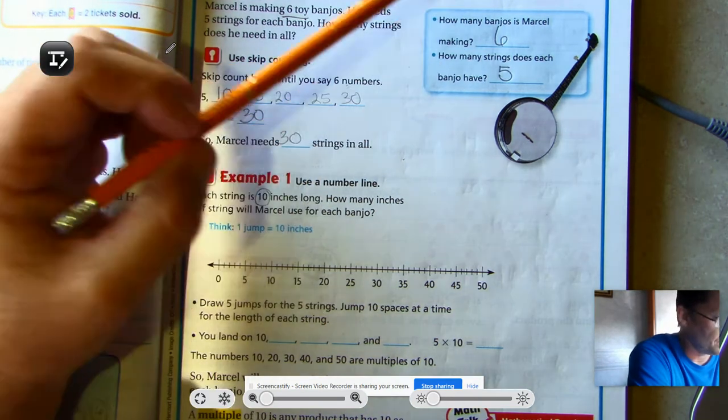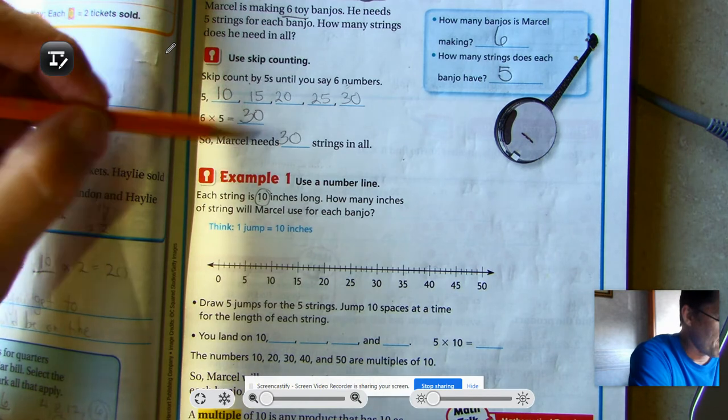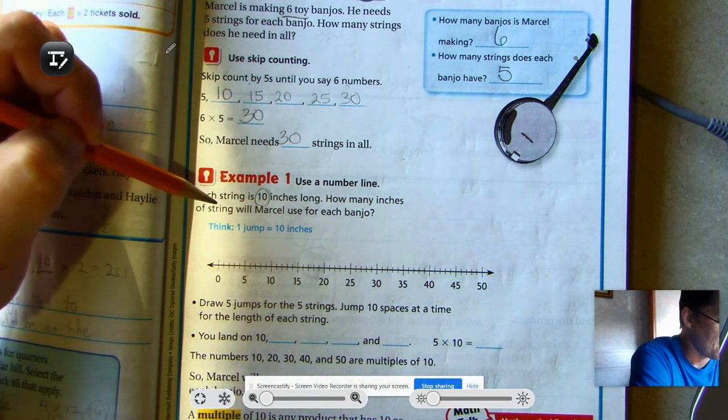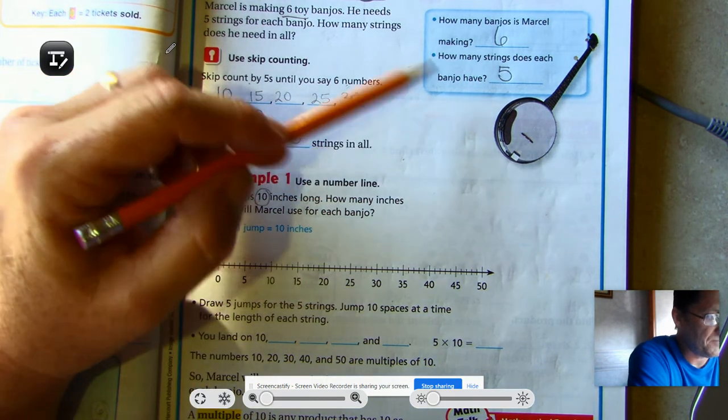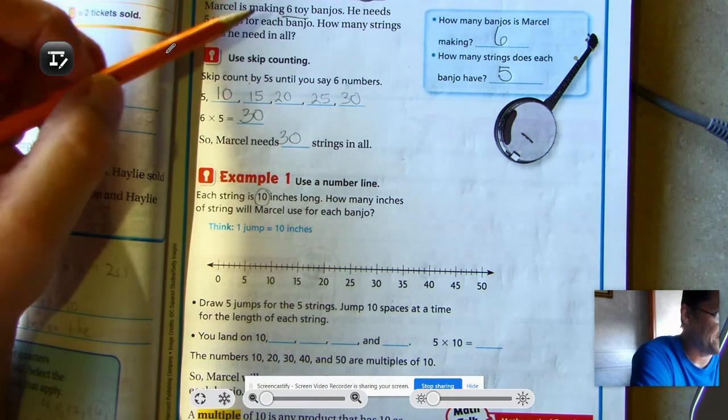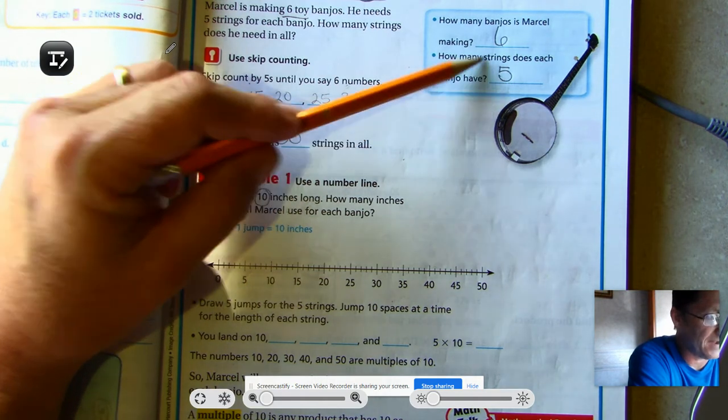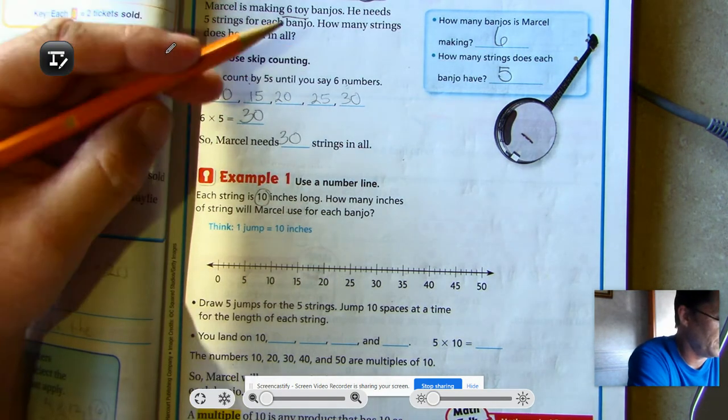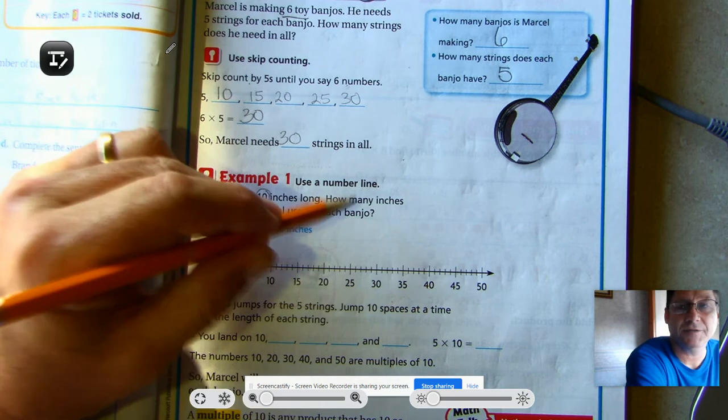So for each banjo, he has five strings from our previous problem. So five strings in every banjo. So we're going to have five jumps of 10.